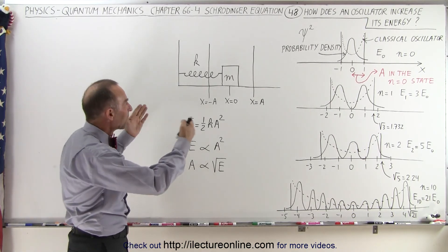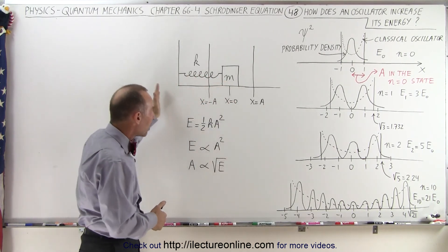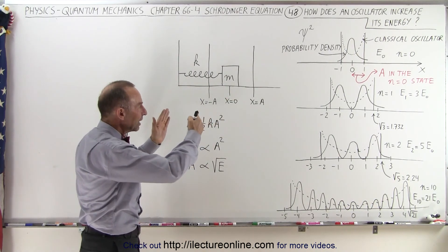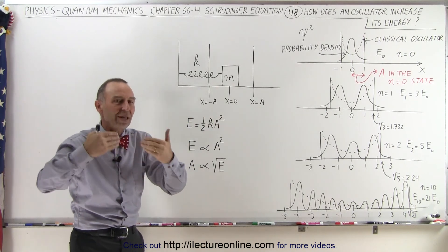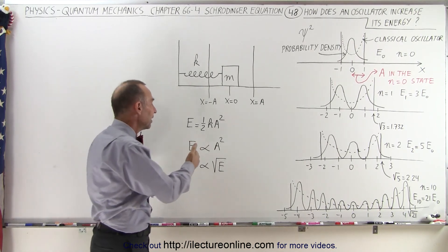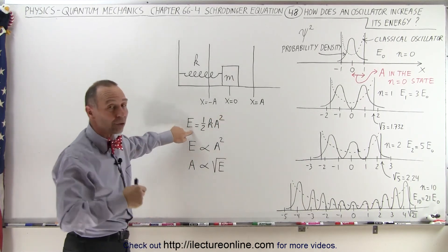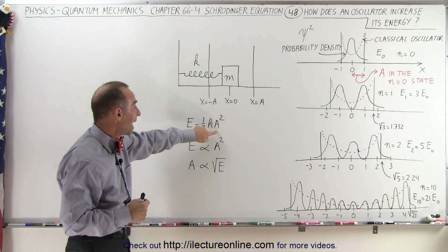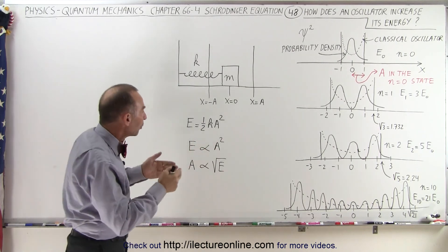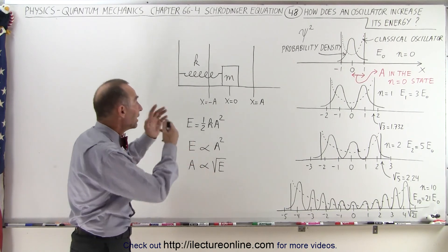In a classic mechanical oscillator, we have a mass attached to a spring. The spring allows the mass to oscillate back and forth, and we can see that the amplitude of oscillation can increase gradually — it doesn't have to increase in a stepwise function. If we add a little bit more energy, it will increase the amplitude a little bit more, so the amplitude can have an infinite number of values. The total energy of the oscillator equals one half k a squared, meaning energy is proportional to the amplitude squared, and the amplitude is proportional to the square root of the energy.